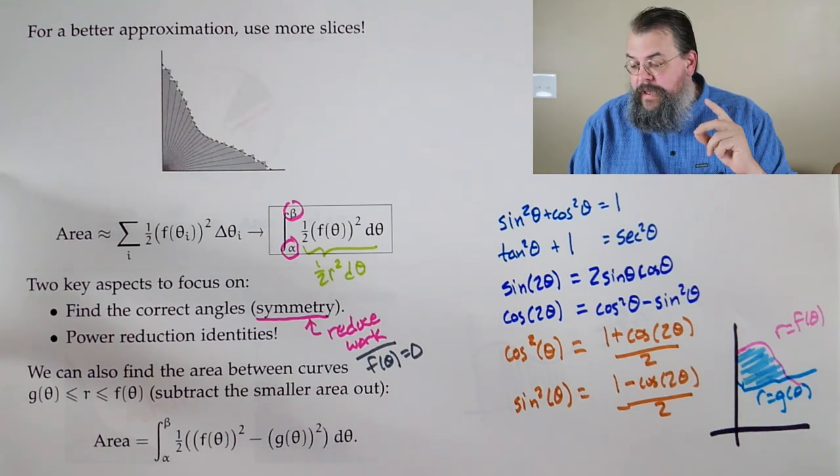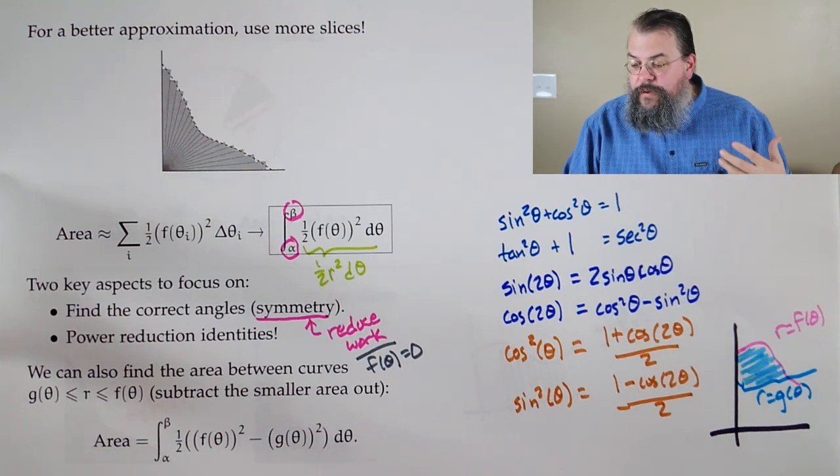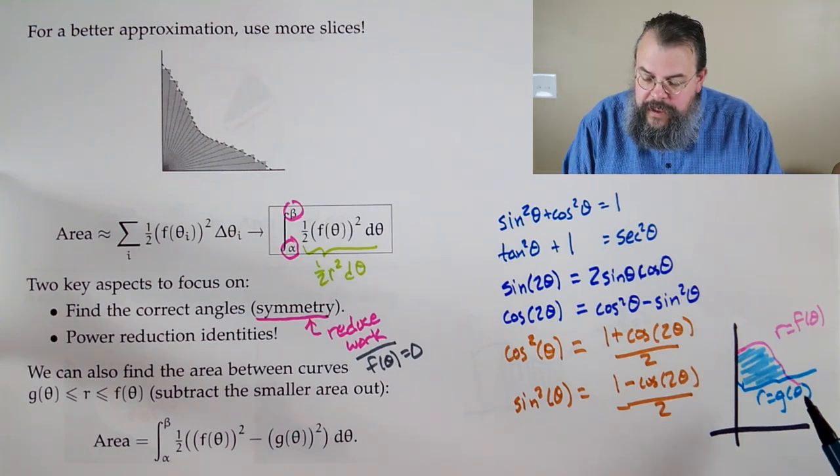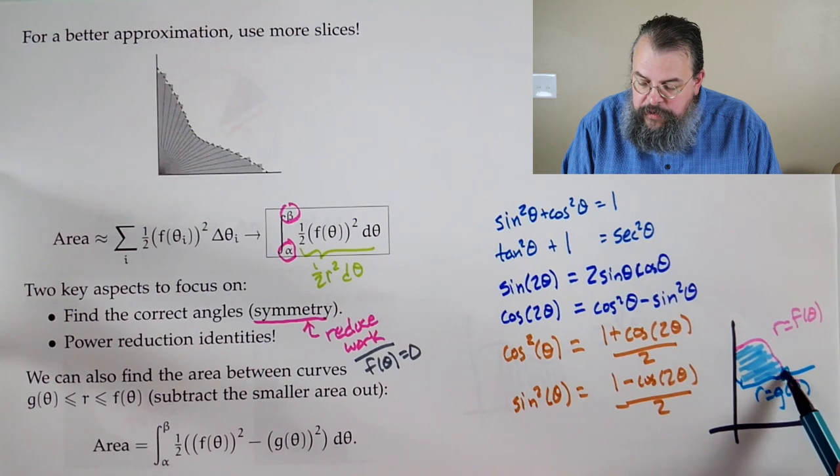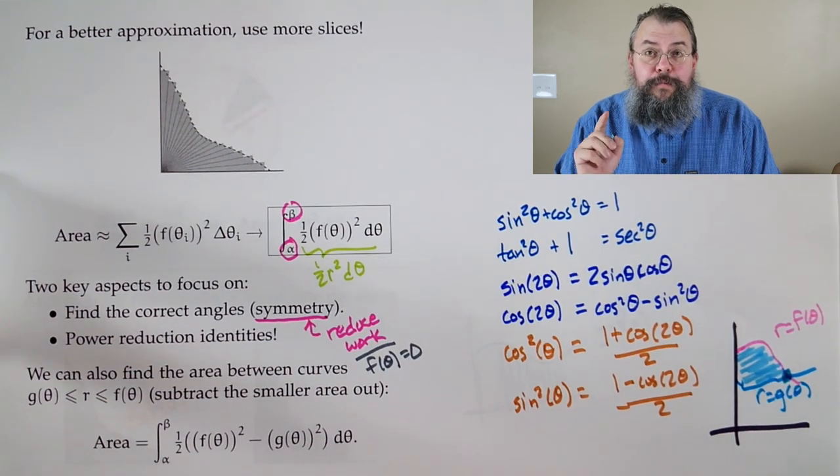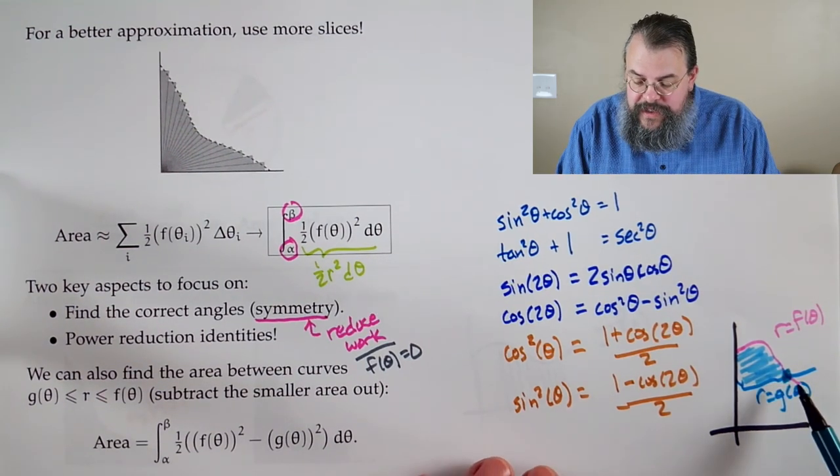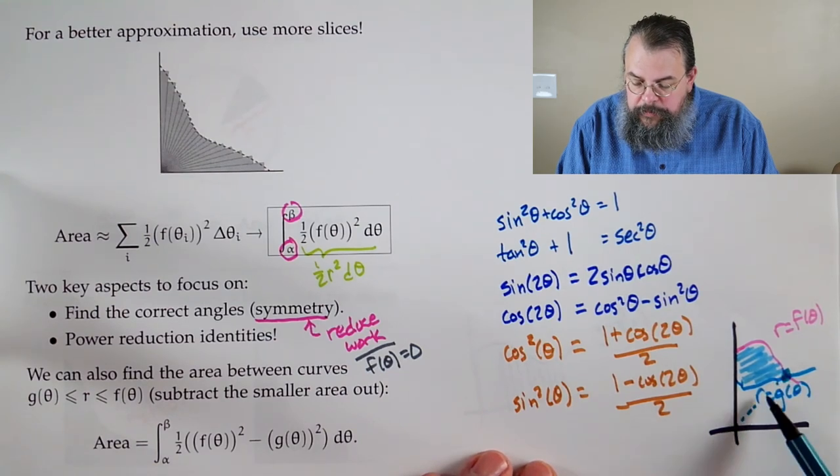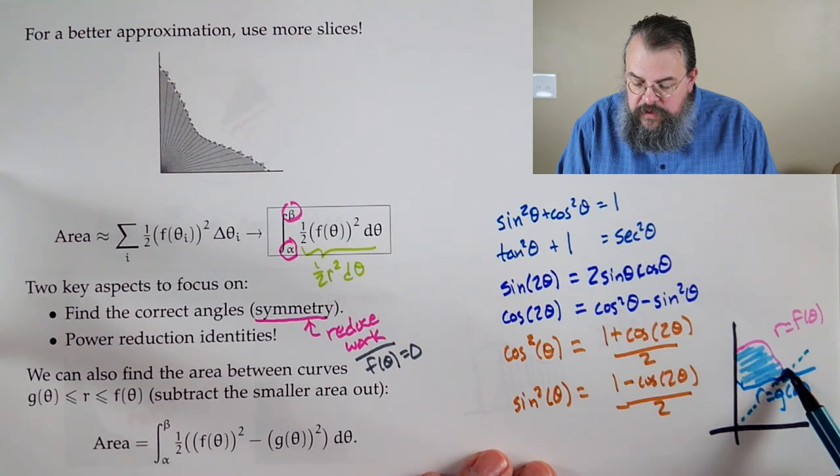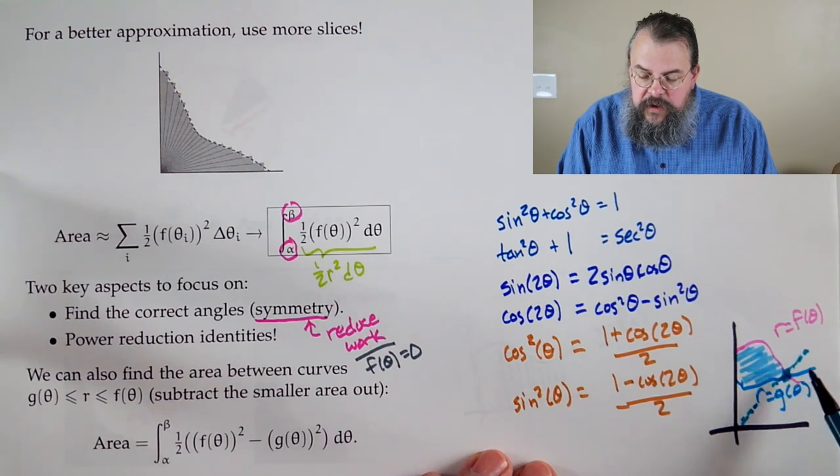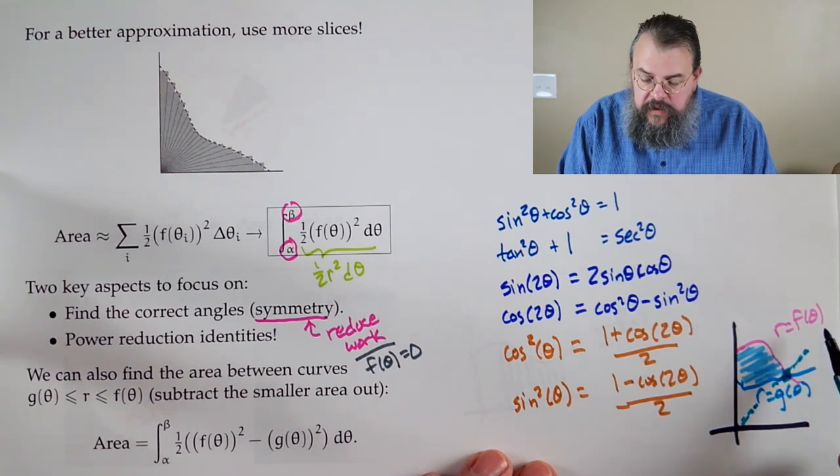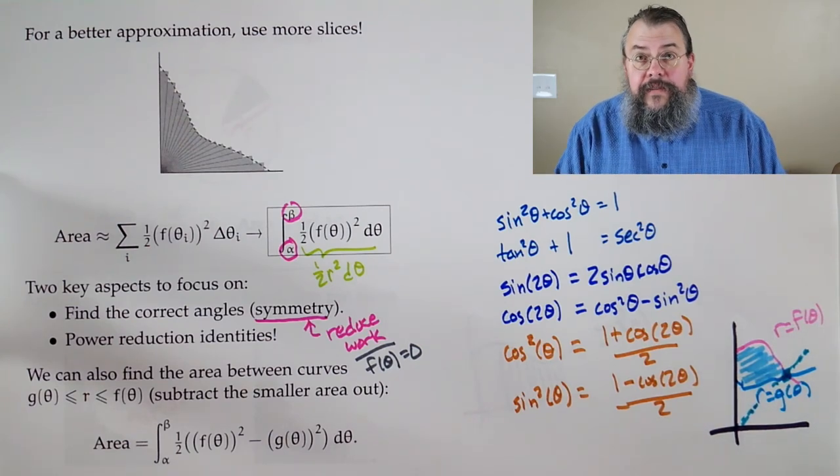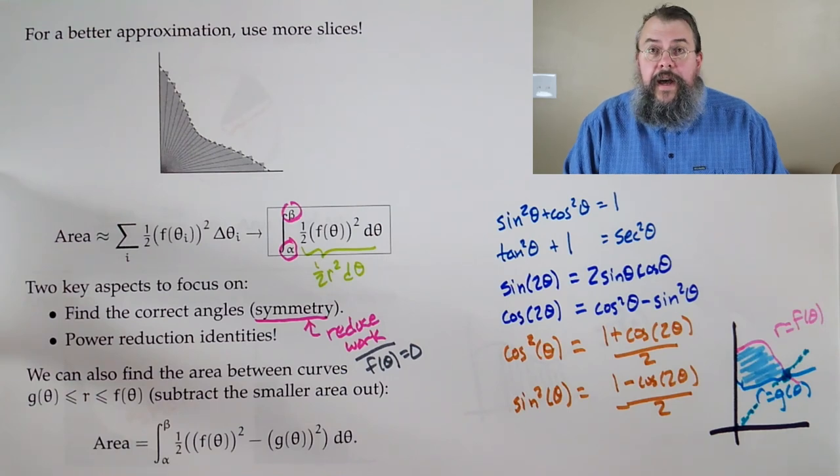So, either they're given to you, or if they're not, you look for intersection points. Now, remember, we're in polar coordinates. So, it's not in terms of x. It's not in terms of y. It's in terms of an angle. So, what you do is you say, for which angle do they intersect? Well, you set f of theta equals g of theta. Solve. And that's how you find the intersection.